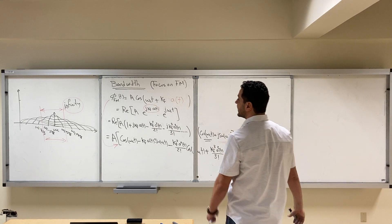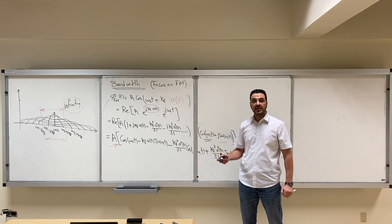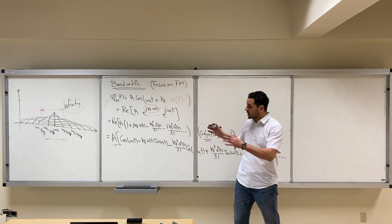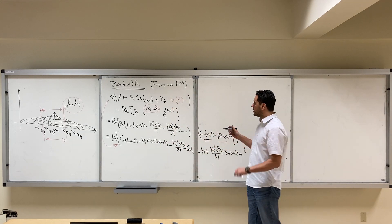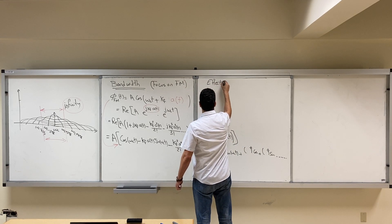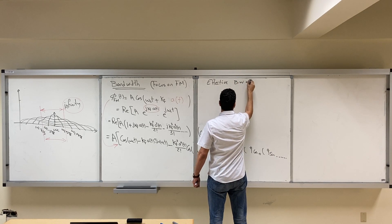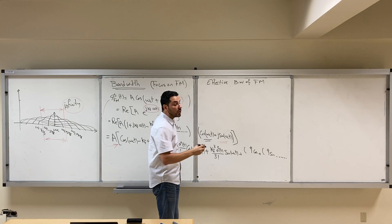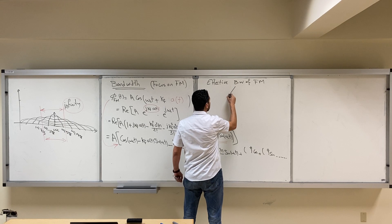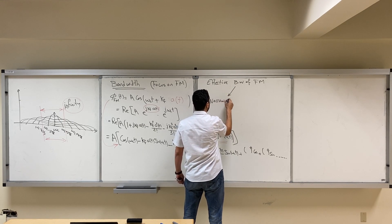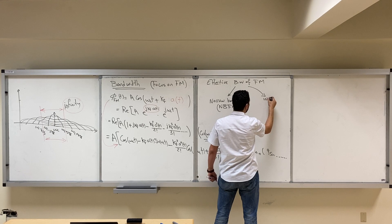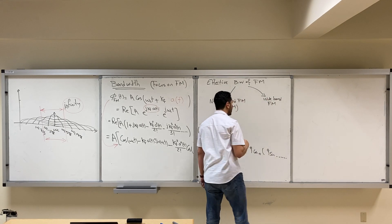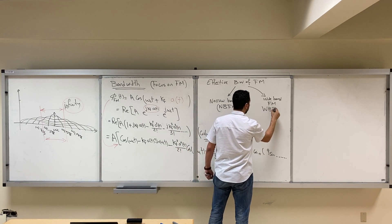In the previous video we saw that theoretically the bandwidth of angle modulated signals is actually infinity. However, the energy or power of these signals will be concentrated in a finite bandwidth, and our job now is to find this finite bandwidth — the effective bandwidth of FM. We are going to make two case studies: narrowband FM (NBFM) and wideband FM (WBFM).